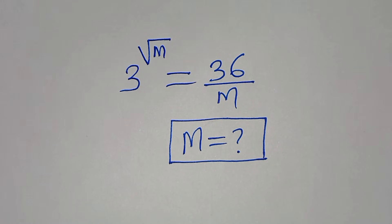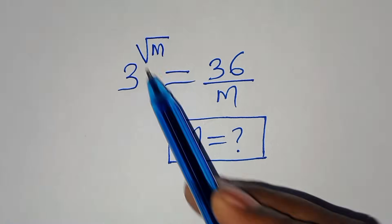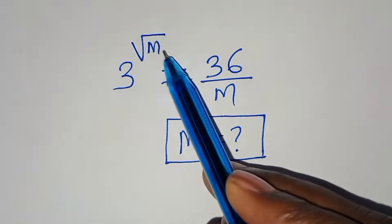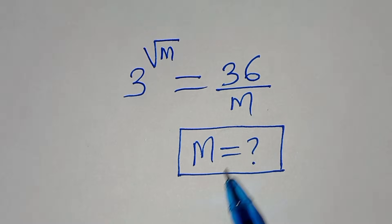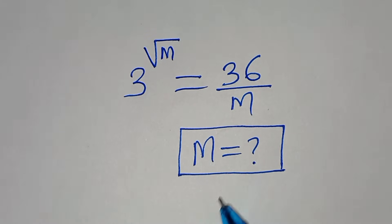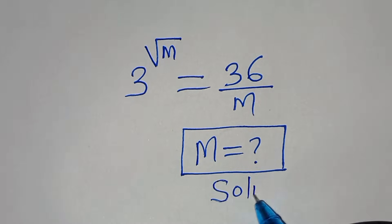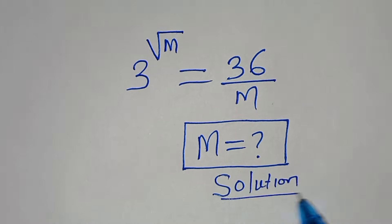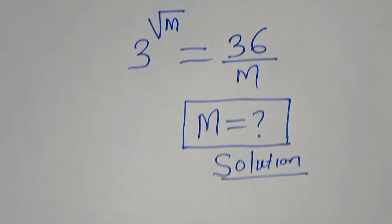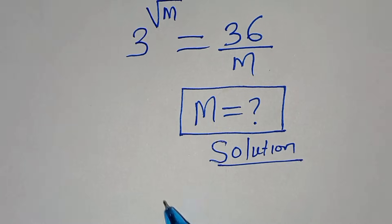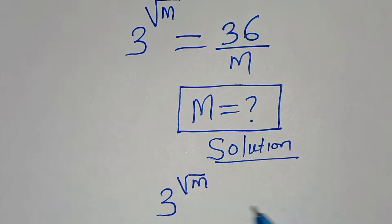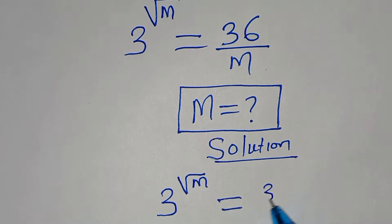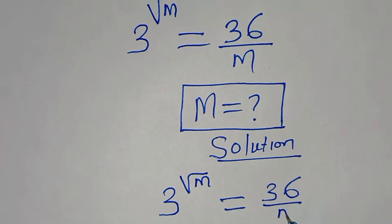Hello everyone, welcome to solve this nice math problem: 3 raised to the power of square root of m equals 36 over m. What is the value of m? Now let's provide a solution.